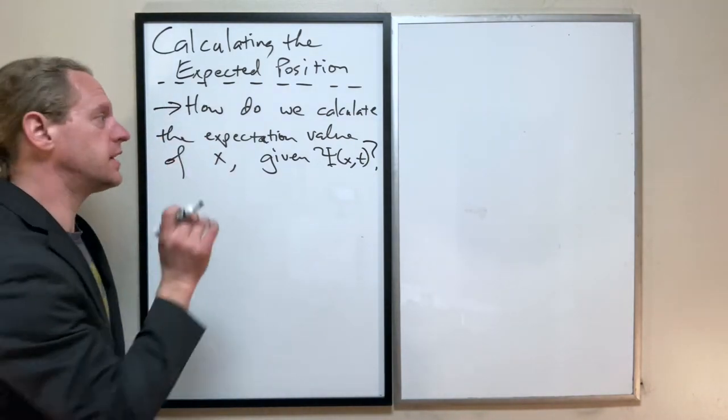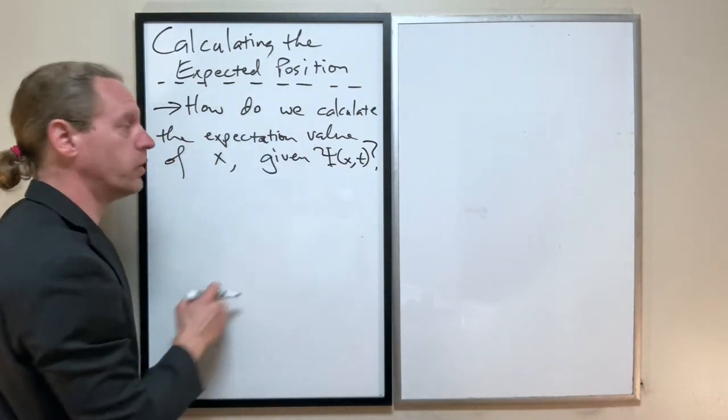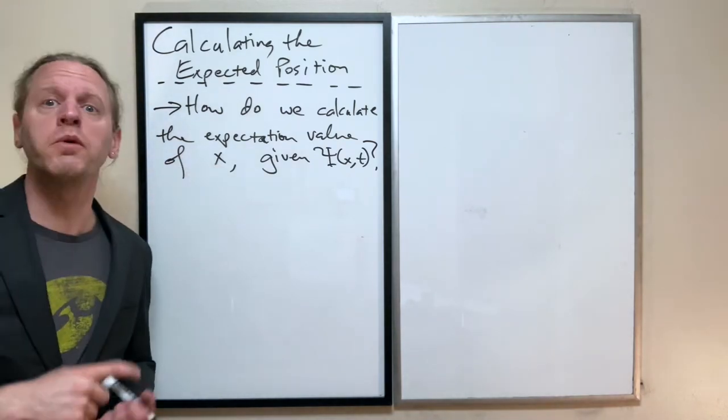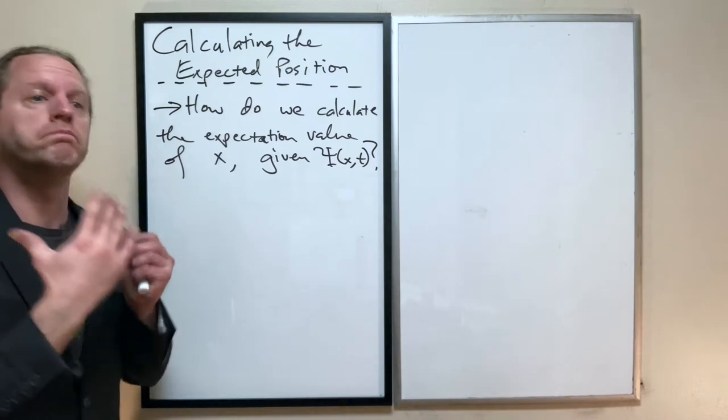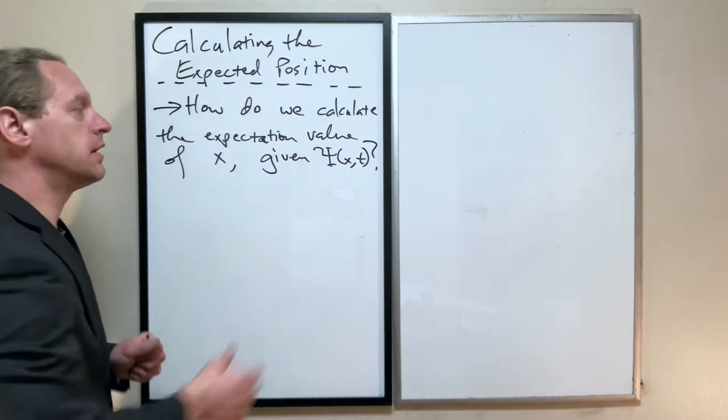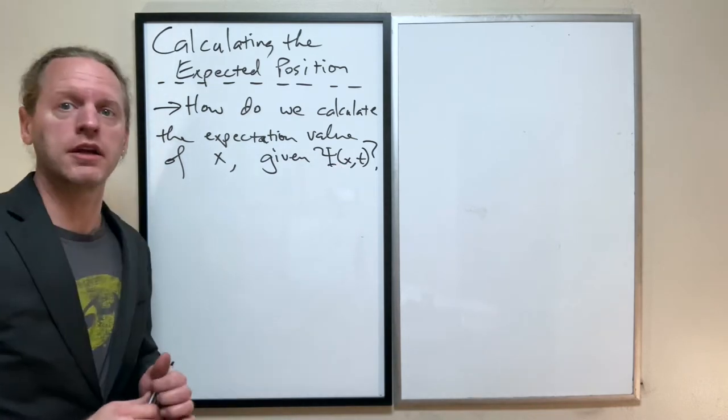So that's what that question means. How do we calculate the expectation value of x, of the position? And again, to be clear, we're asking, what is the most likely answer for where that particle will be, if you know what that function already is?